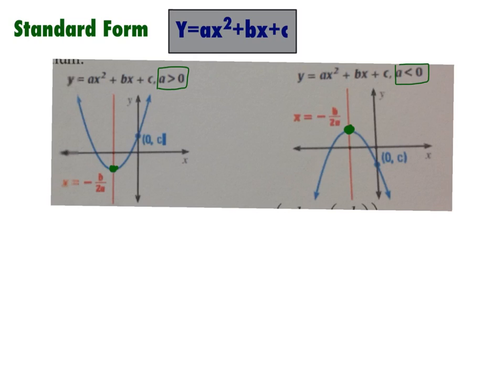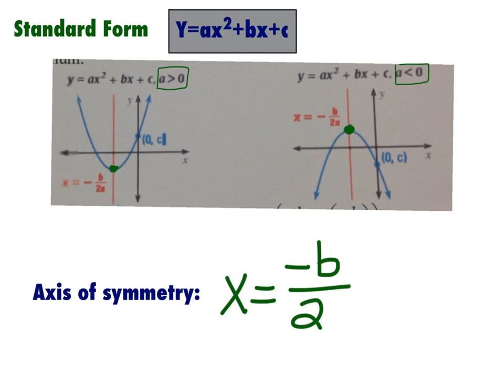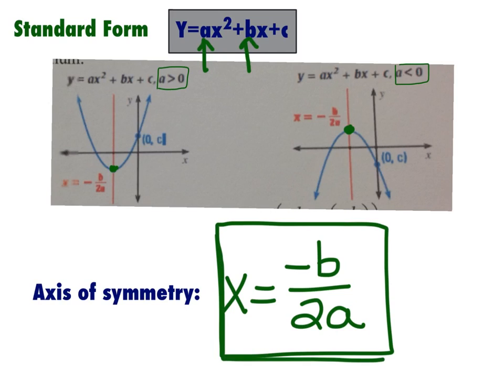And to find the axis of symmetry, this red line of any parabola, get ready to write this down, x equals, because it is a vertical line, so you have to put x equals negative b over 2a, with this being a and this being b. You can always find your axis of symmetry using negative b over 2a. And that's going to be important to you later, so maybe box it, star it, highlight it, I don't know, tape it to your forehead, do something important with it.